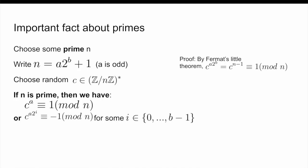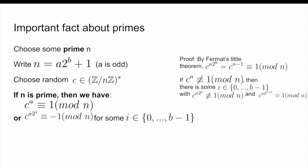So, as i iterates from 0 to B, C to the power of A times 2^i eventually is going to switch from not being congruent to 1 to being congruent to 1. In other words, there is some i in {0, ..., B−1} such that C^(A·2^i) is not congruent to 1, but C^(A·2^(i+1)) is. Now, if we define X to be equal to C^(A·2^i), then since X squared is C^(A·2^(i+1)), which we just said was 1 modulo N, we have that N is going to be dividing X² − 1, which equals (X+1)(X−1).